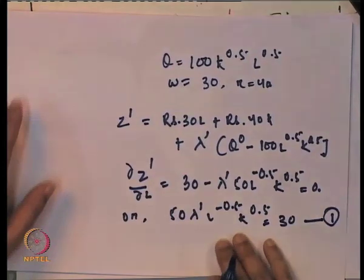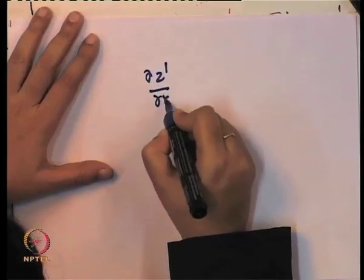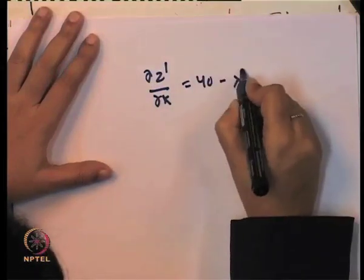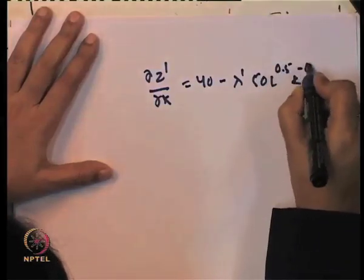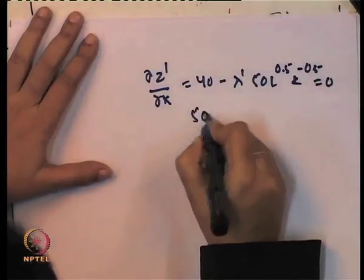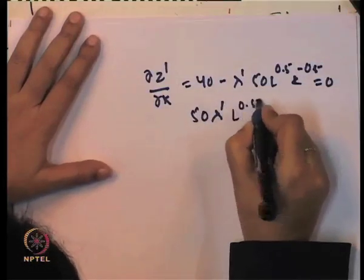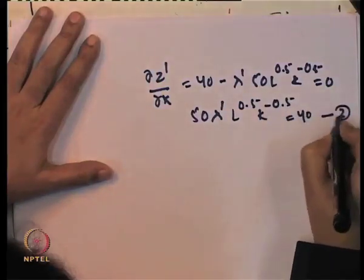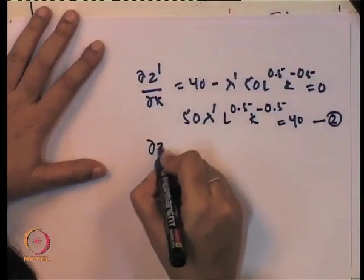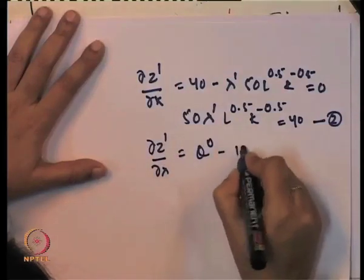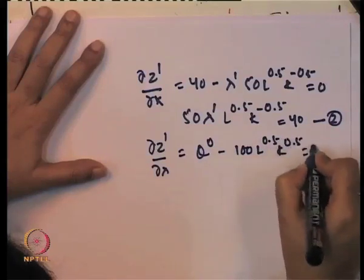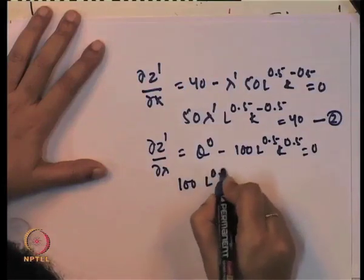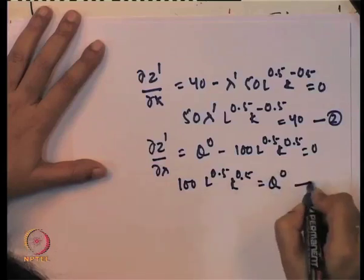We take the first-order partial derivative with respect to K: 40 − λ·50·L^0.5·K^(−0.5) = 0, or 50λ L^0.5 K^(−0.5) = 40. Call this equation 2. The partial derivative with respect to λ gives: Q₀ − 100 L^0.5 K^0.5 = 0, so 100 L^0.5 K^0.5 = Q₀. Call this equation 3.